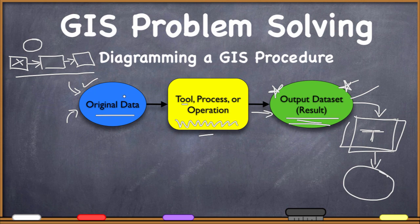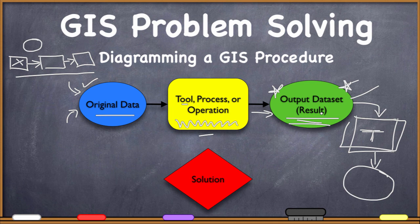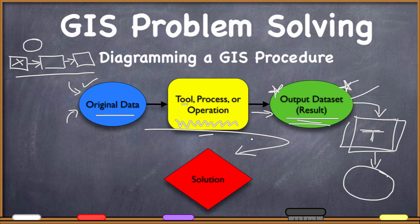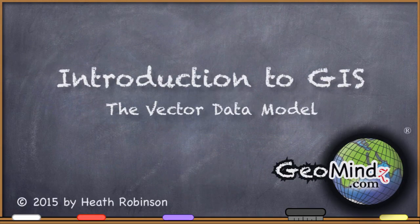So these three steps — original data in blue, tool or operation, and output — are the core of the diagram. And once we reach our final stopping place, our solution, I'm going to use a red diamond to indicate that's where we stop. We've gone all the way from the blue original data, through all of our chain, down to what we believe the solution should be. That's the theory of what we're doing here. We'll look at our first simple problem in the next video. See you next time.